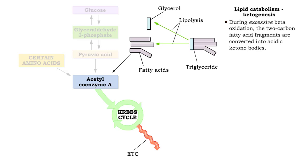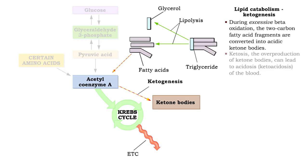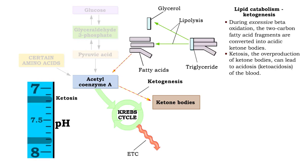When beta-oxidation is excessive, the two-carbon fatty acid fragments are converted into acidic ketone bodies. This overproduction of ketone bodies results in a condition known as ketosis and can lead to ketoacidosis of the blood.